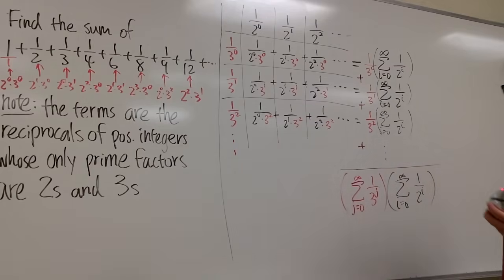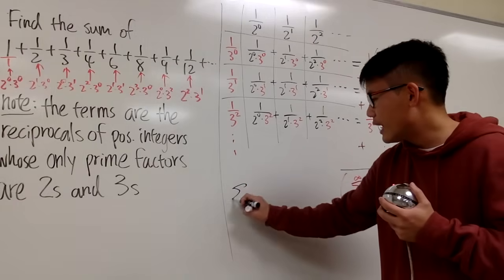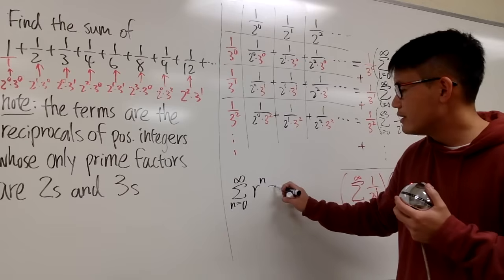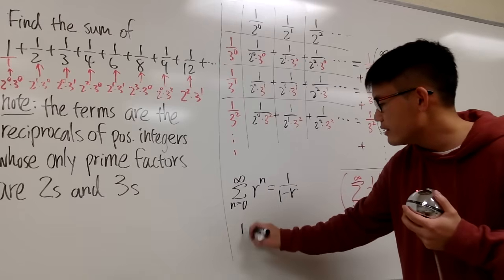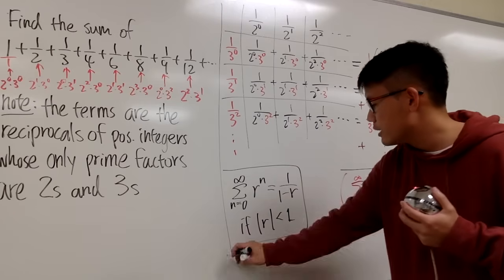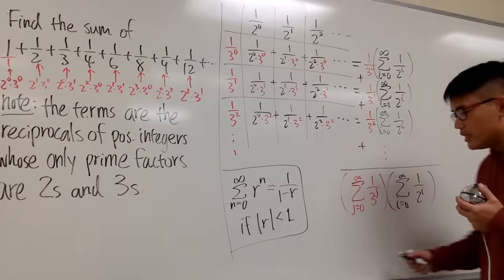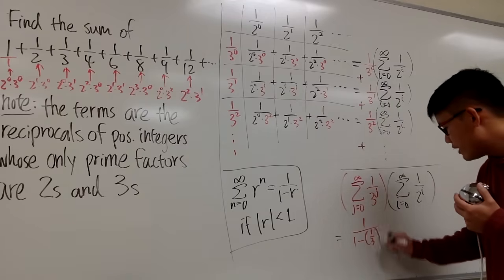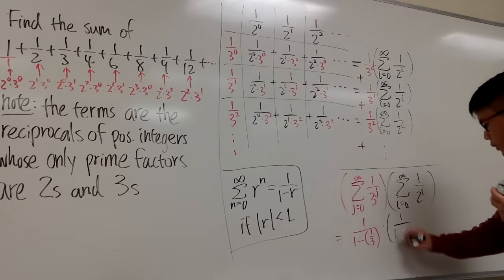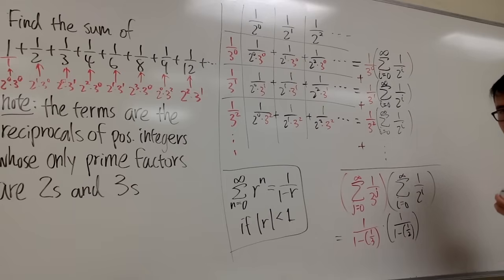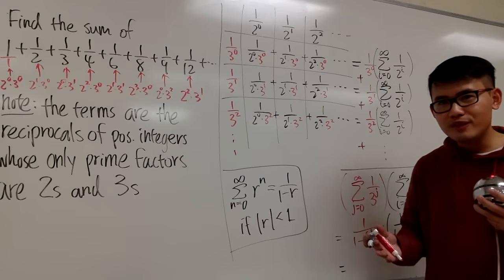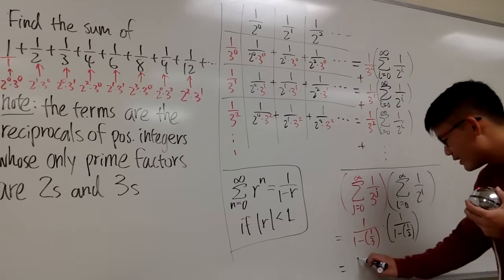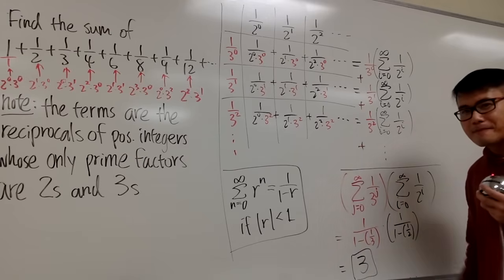So for the 3-series, the sum is 1 over (1 minus 1/3). For the 2-series, the sum is 1 over (1 minus 1/2). If you've been watching this Math for Fun series, you should know how to compute these. Multiplying them together, you end up with 3. How cool is that?